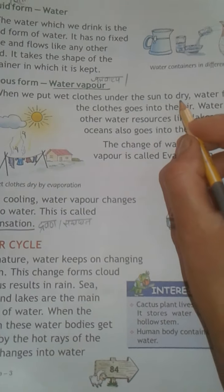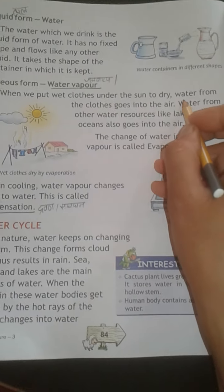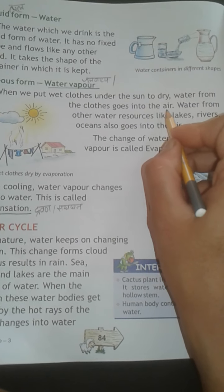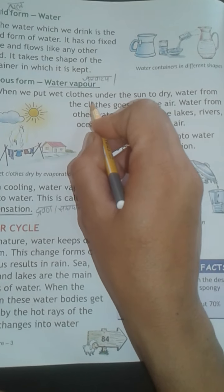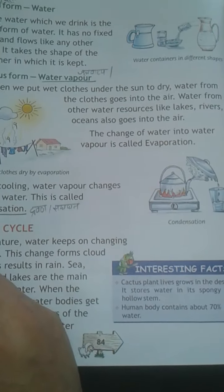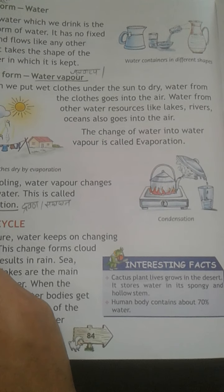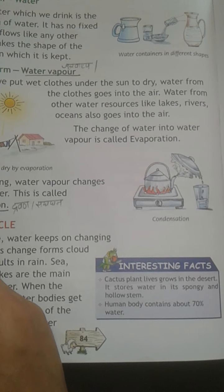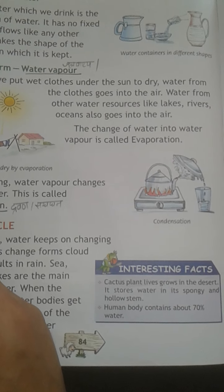When we put wet clothes under the sun to dry, water from the clothes goes into the air. We see that after some time the clothes dry up because the water has evaporated.